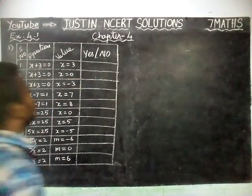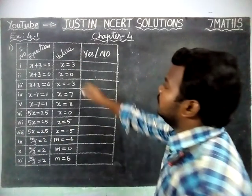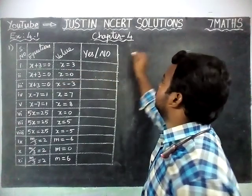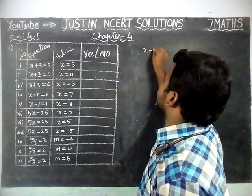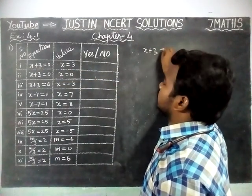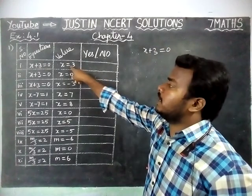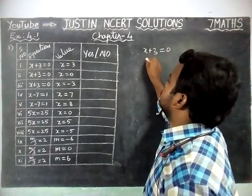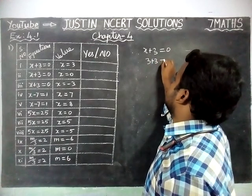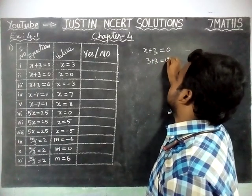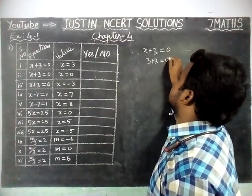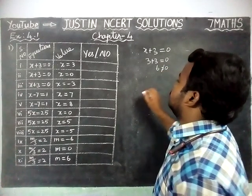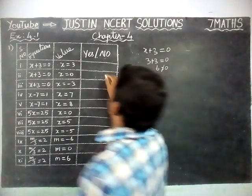We are going to substitute values one by one. For the first question: X plus 3 equal to 0. They have given X value is equal to 3. So when we substitute X is equal to 3, 3 plus 3 is equal to 6, but they have given 0 — so that is not possible. So this is no.